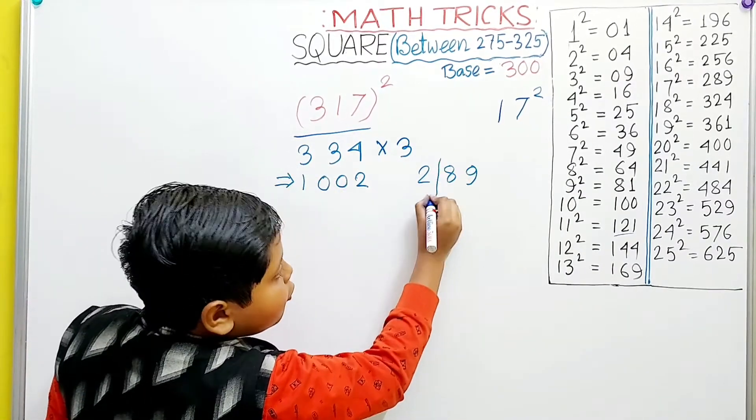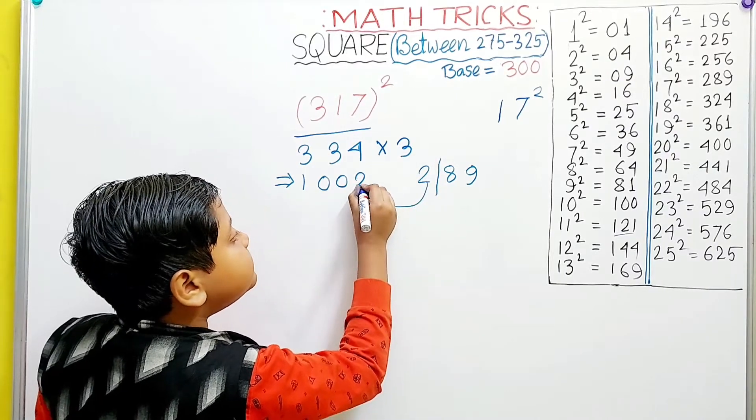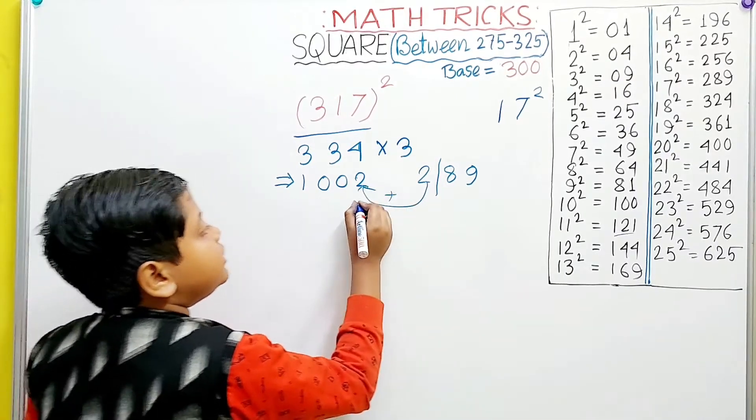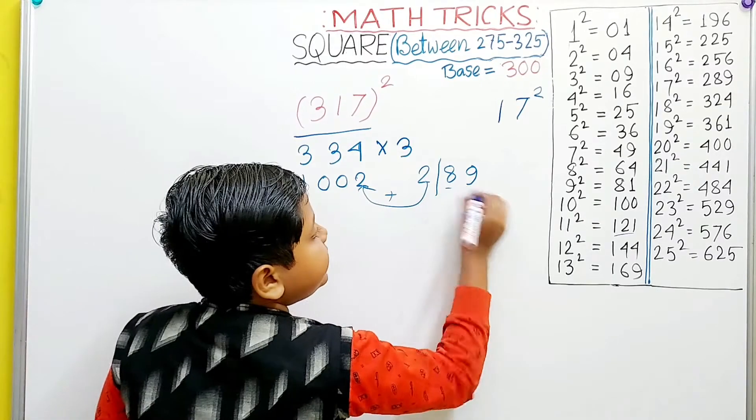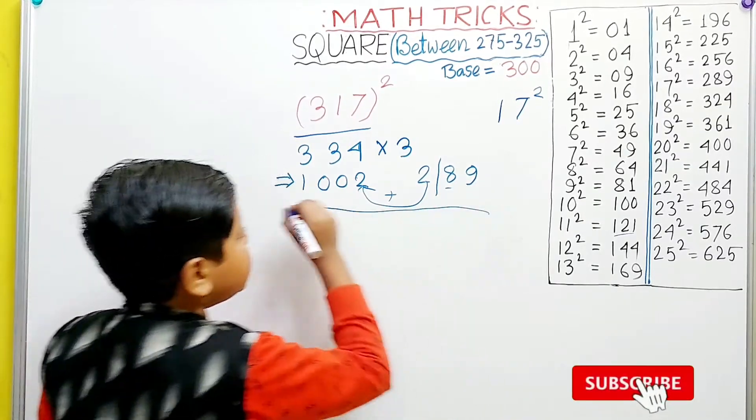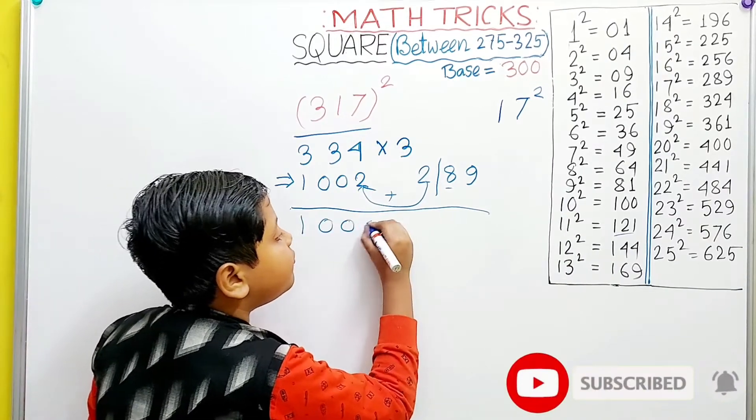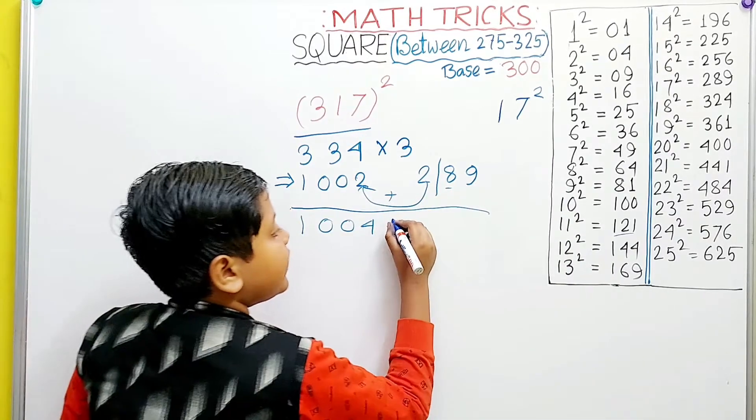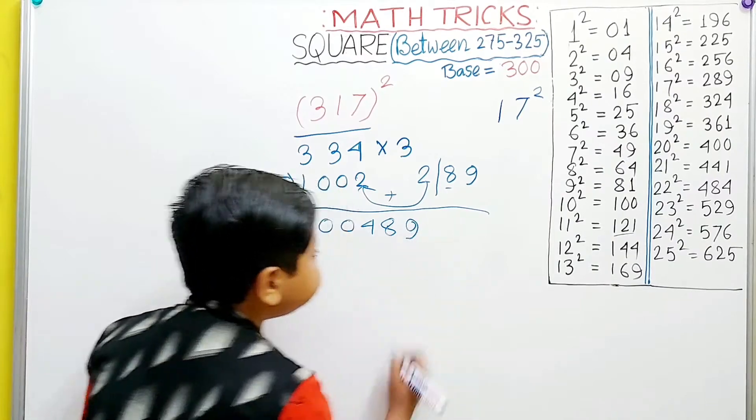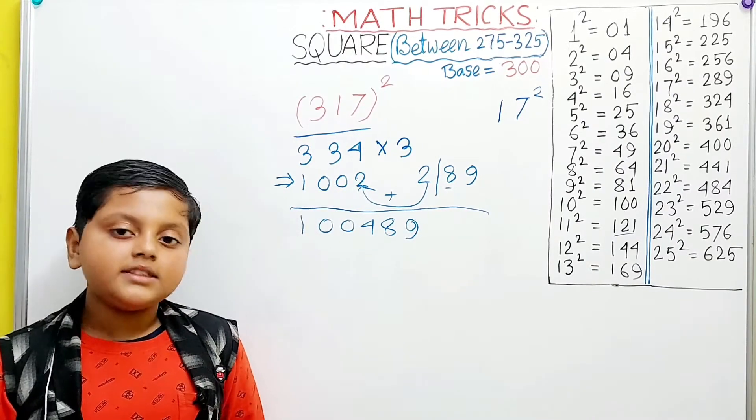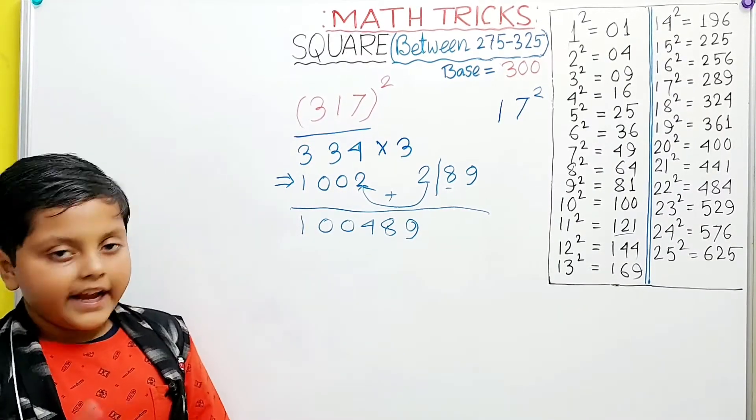We are going to carry 2 to 1002 and write 89 beside it. So 1002 plus 2 equals 1004. Then 89 after it. And this is our answer, 100489.